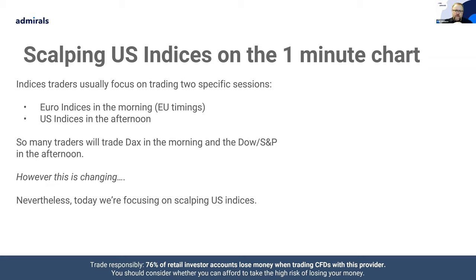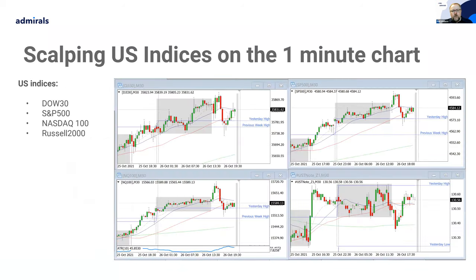Generally we're going to focus on US indices in the afternoon session — what will be the afternoon for us in the UK and Western Europe, but will be the opening of the actual US session itself. If you're completely new, you need to be aware that there are four main US indices: the Dow 30, the S&P 500, the NASDAQ 100, and the Russell 2000. We're going to focus on the Dow, the S&P, and the NASDAQ in particular.